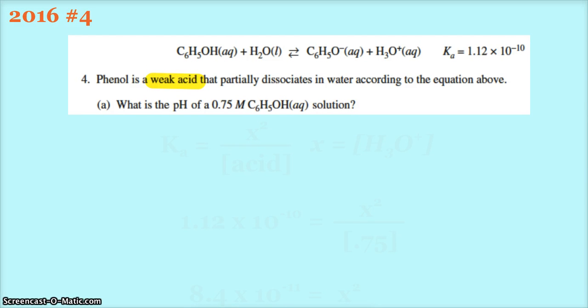Alright, here we're looking at question 4 from the 2016 exam. It says phenol is a weak acid that partially dissociates in water according to the equation above. So this must be the phenol water and then I've got the conjugate base and the hydronium showing that it's an acid. I've got a Ka value 10 to the negative 10, so indeed a weak acid. What is the pH of a 0.75 molar phenol solution?